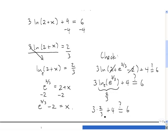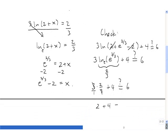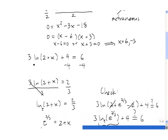Well, 3 times 2/3 is really 3 over 1 times 2/3. These 3's cancel and we're just left with 2 plus 4. And that does indeed equal 6. So that means that x equals e^(2/3) minus 2 is a solution to this original equation here. 3 times the natural log of 2 plus x plus 4 equals 6.